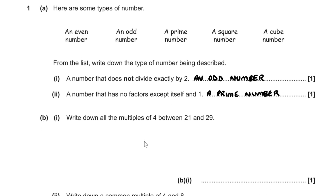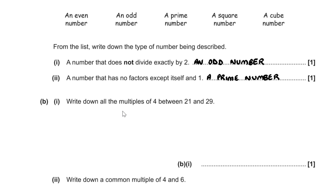For the first part of part B, we have to write down all the multiples of 4 between 21 and 29. A multiple of 4 means numbers in the 4 times table. The numbers that are multiples of 4 between 21 and 29 are 24 and 28.